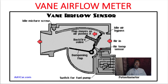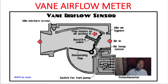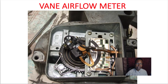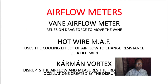Here's the vane flow sensor. Here's the potentiometer inside here. Air flows here and moves a vane valve — it looks like this, like a potentiometer. It moves that vane — it's like a door, though they don't have a great picture of the door here.